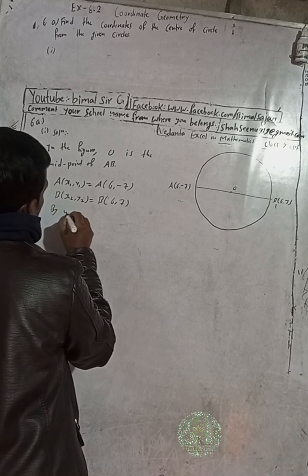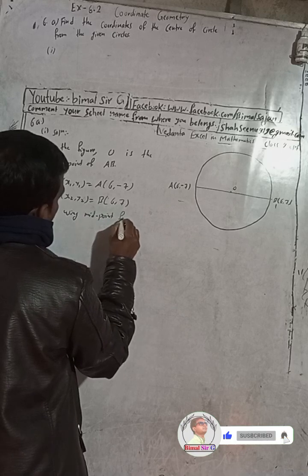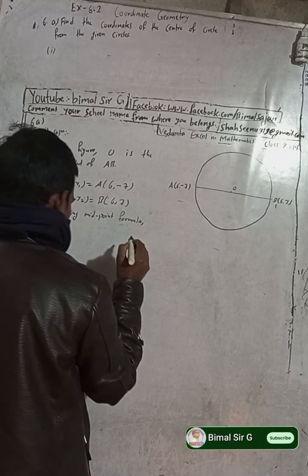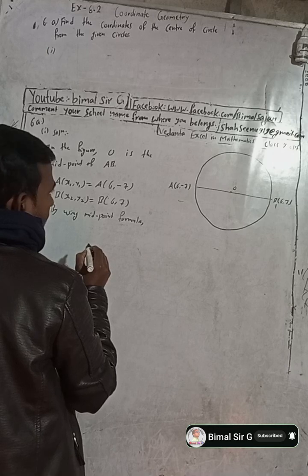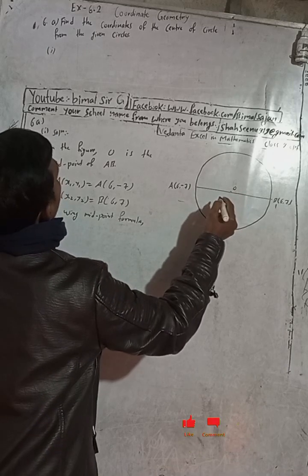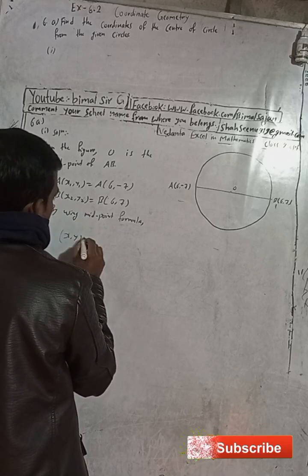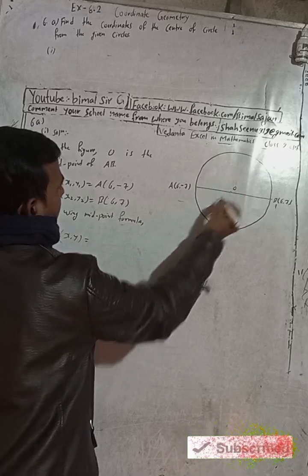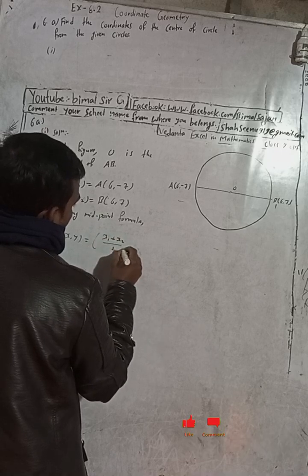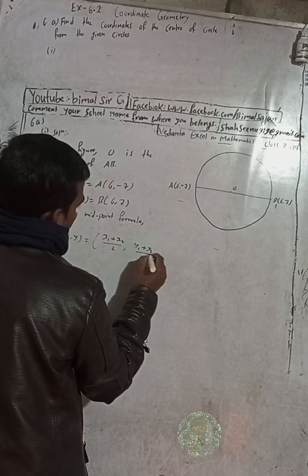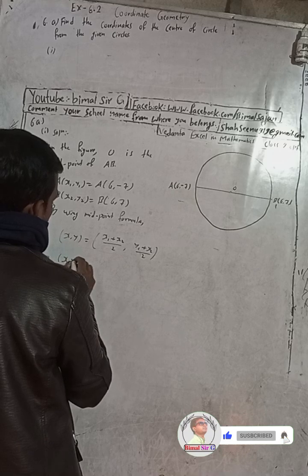By using the midpoint formula, we can write the midpoint as (x, y). The midpoint formula gives us: x comma y equals x1 plus x2 by 2, comma y1 plus y2 by 2. So this implies we use our formula to find x comma y.